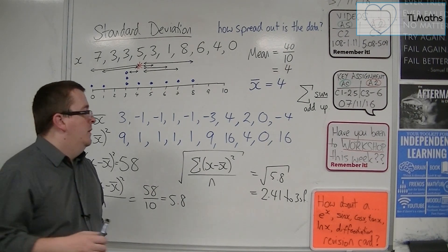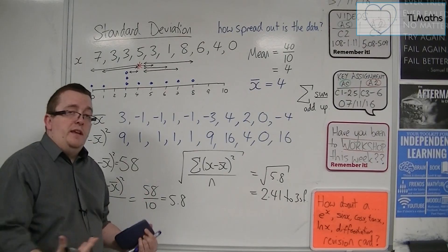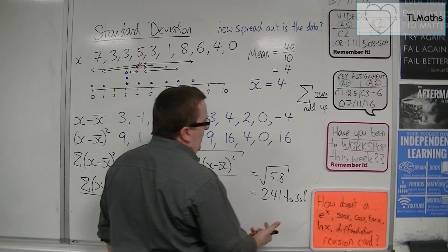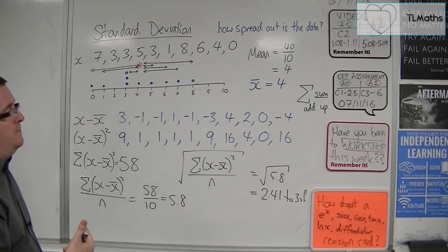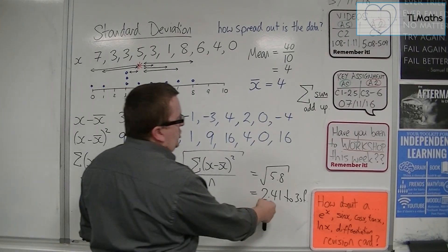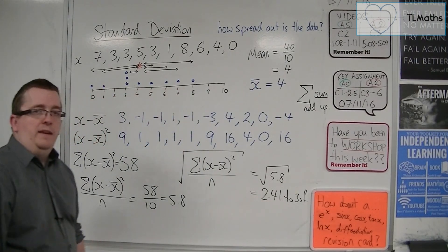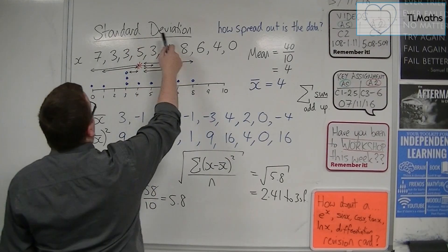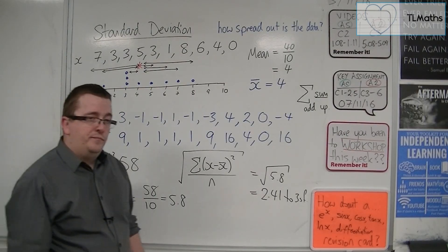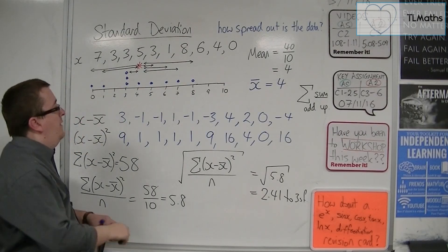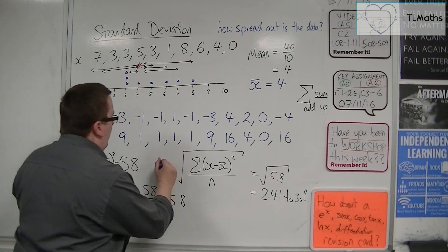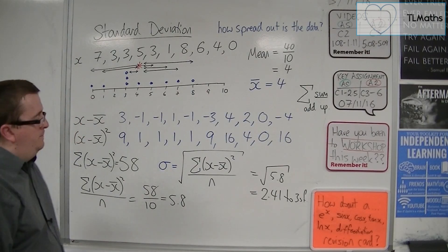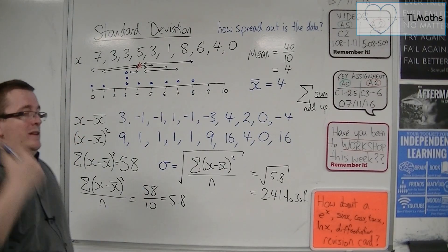This is what would be referred to as the standard deviation of these numbers. Okay. It is, that is effectively what it is. The standard deviation tells you how spread out the data is. So, for this set of data, we could say that on average, the numbers are 2.41 away from the mean. And that's what we refer to as the standard deviation. How much do the numbers deviate from the mean? And we represent this using a sigma. So, the sigma represents the standard deviation. Now, there's only one problem.